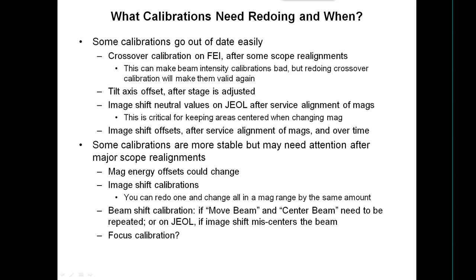A common question is what calibrations need to be done and when. Some calibrations go out of date very easily. The crossover calibration on the FEI goes out after some scope realignments, and this can make beam intensities bad — especially if you fall into the wrong side of crossover. But all you have to do is redo the crossover calibrations; it shifts everything and keeps track of what they are, making the calibrations valid again.